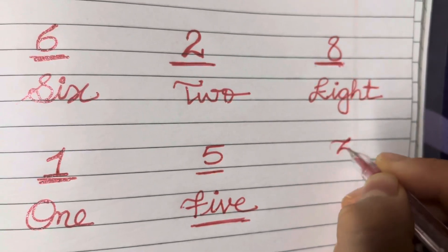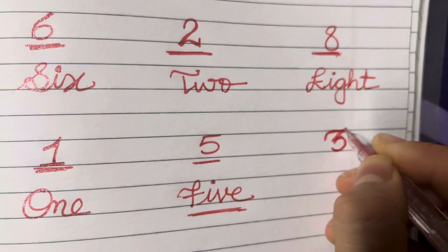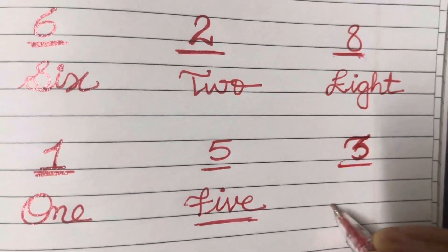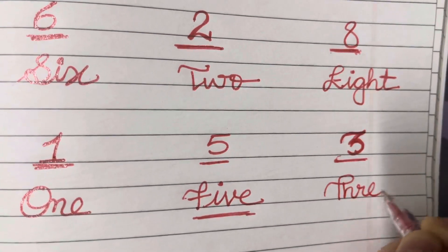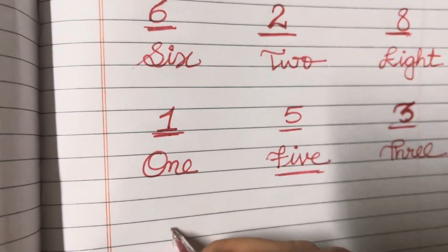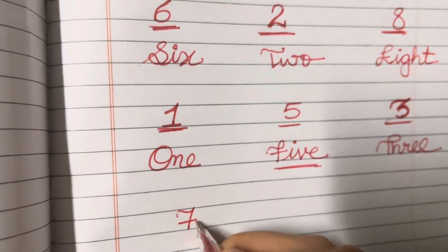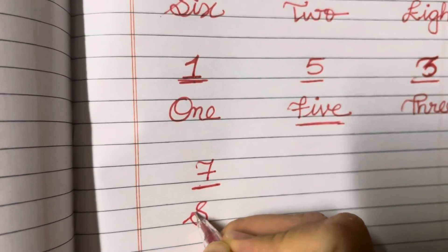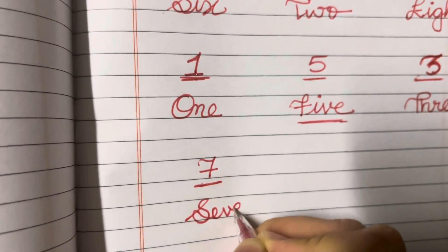Next number is number 3. What's the spelling of 3? T-H-R-E-E. Next number is number 7. The spelling of 7 is S-E-V-E-N.